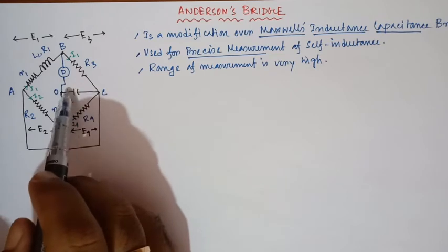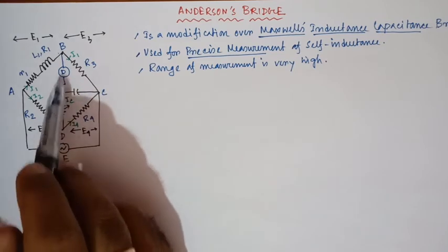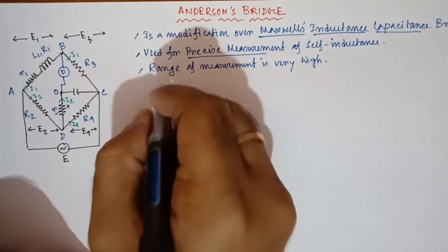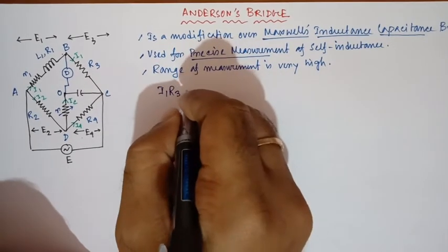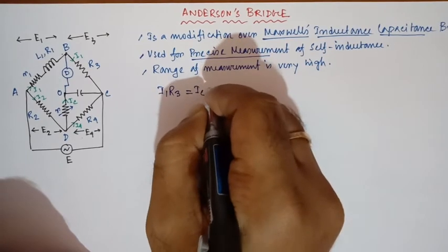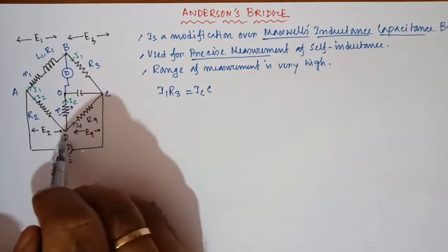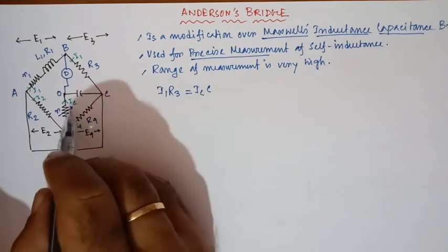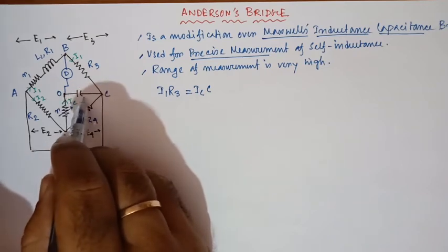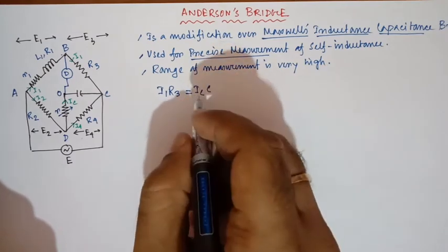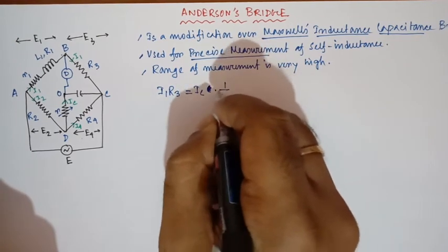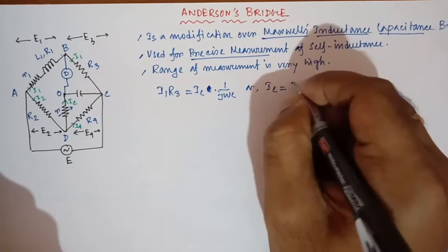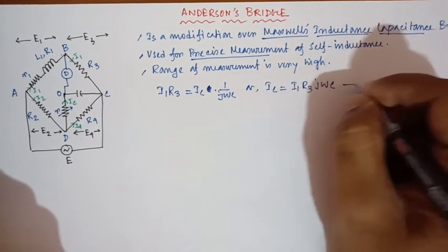From this diagram we can find that the voltage drop of branch 3 is equal to the voltage drop across the capacitor, because the potential of B and O are the same — the potential difference between B and O is zero. So our first equation is: i1 × r3 = ic × (1 / jωC), which gives us ic = i1 × r3 × jωC. This is Equation 1.